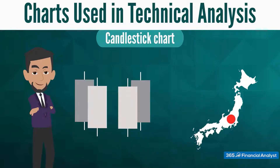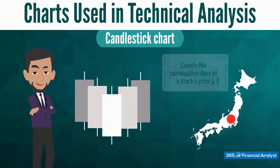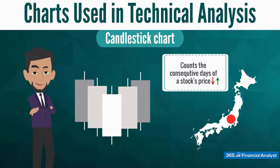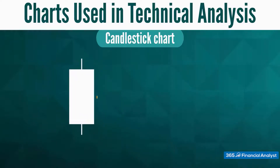Another popular type of chart is the candlestick chart. It was introduced in Japan centuries ago. It provides information similar to a bar chart but tends to be easier to read, making it simpler to count how many consecutive days of a stock's price decrease or increase have been observed. The rectangular body is called the candle, and the top and bottom of the candle indicate a security's opening and closing price for a given trading day.